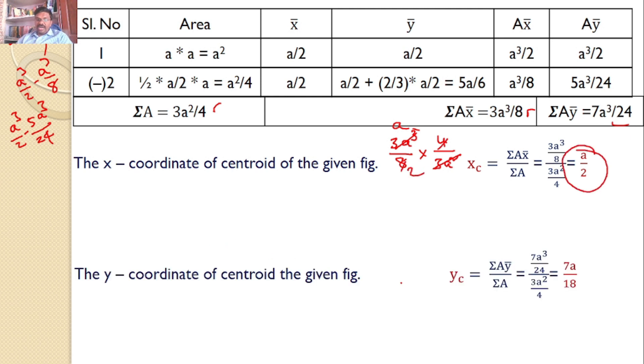Same is the case with the y coordinate, sigma A y bar by sigma a, 7a cubed by 24 by 3a squared by 4, that means 7a cubed by 24, 4 by 3a squared, 4 into 6, a squared, a squared gets cancelled, so 7a by 18. These two are the answers.